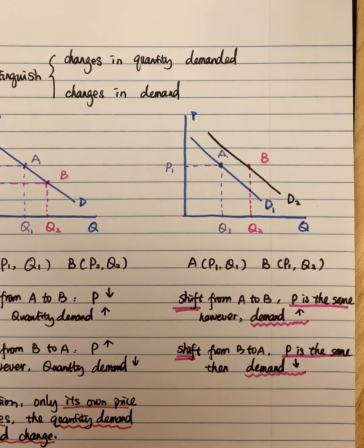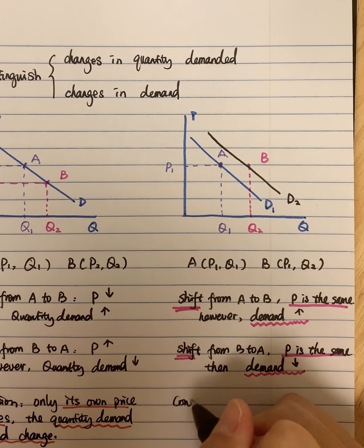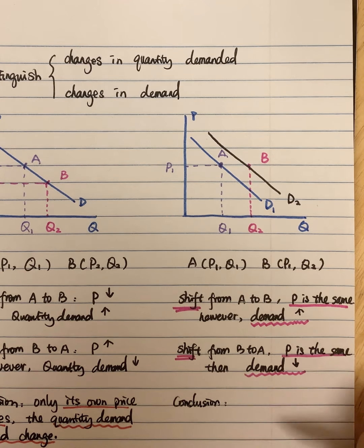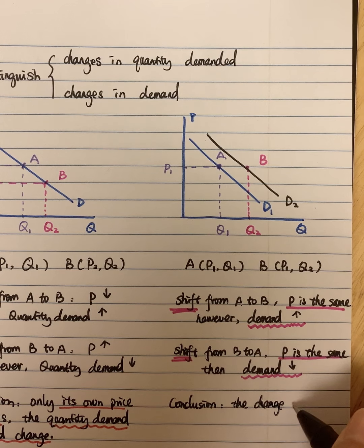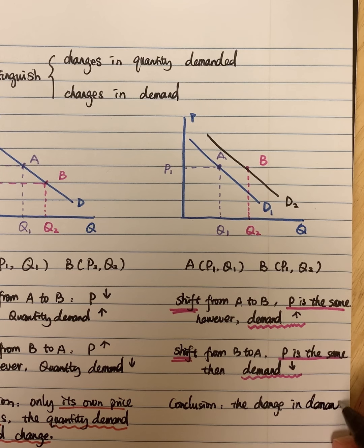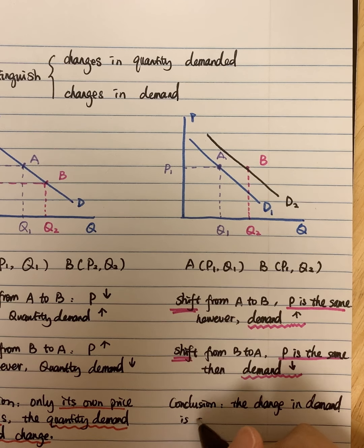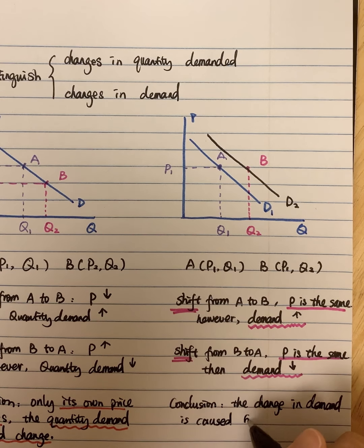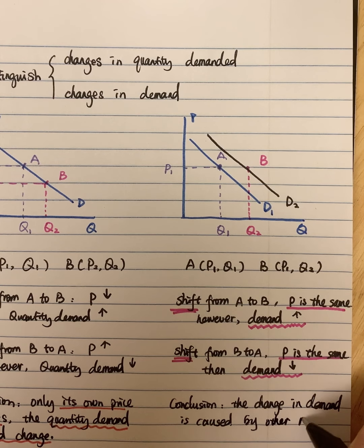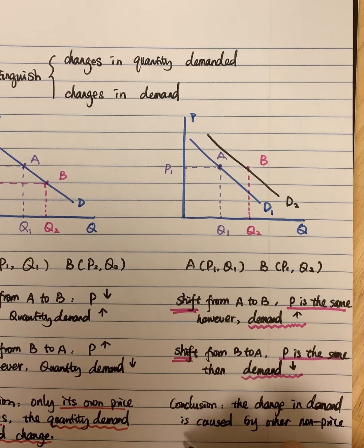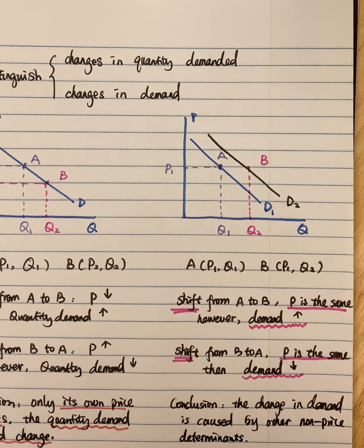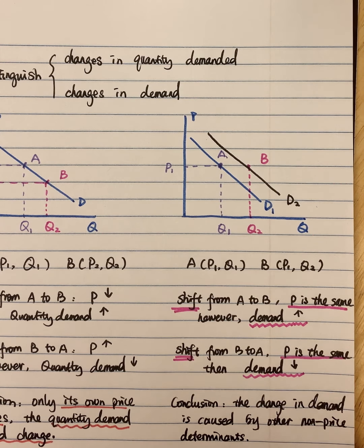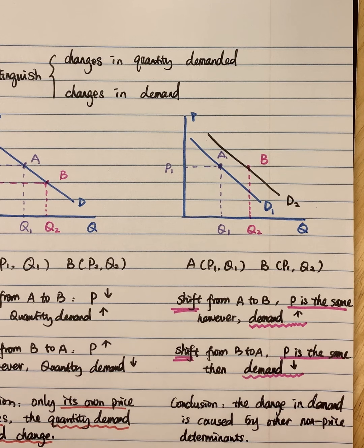We can make a conclusion: the change in demand is caused by other non-price determinants — such as income level, expectations, or preferences. When these change, even if the price doesn't change, it will shift the demand curve.